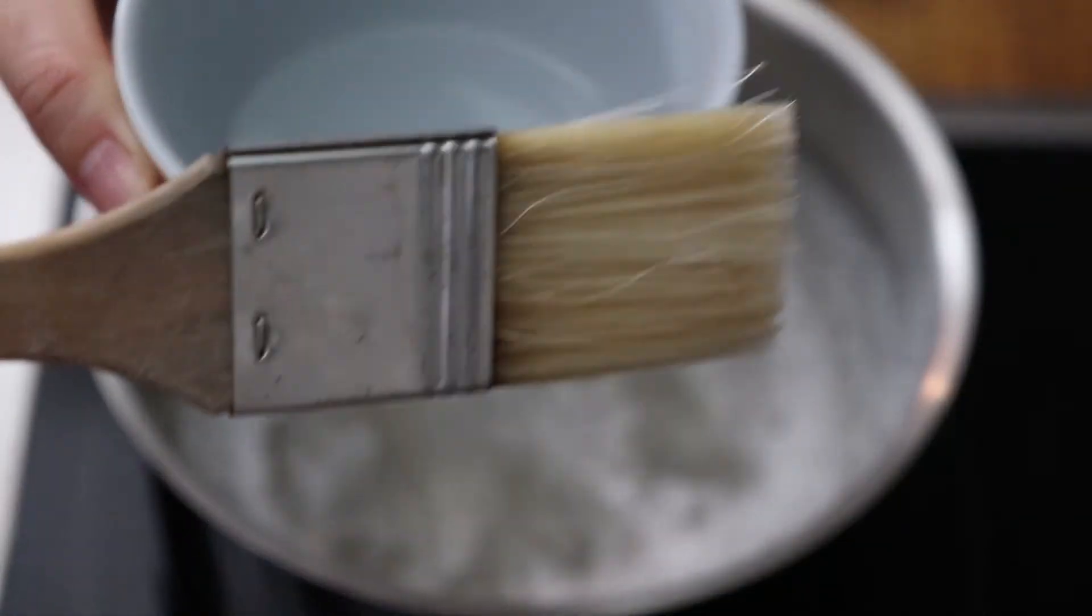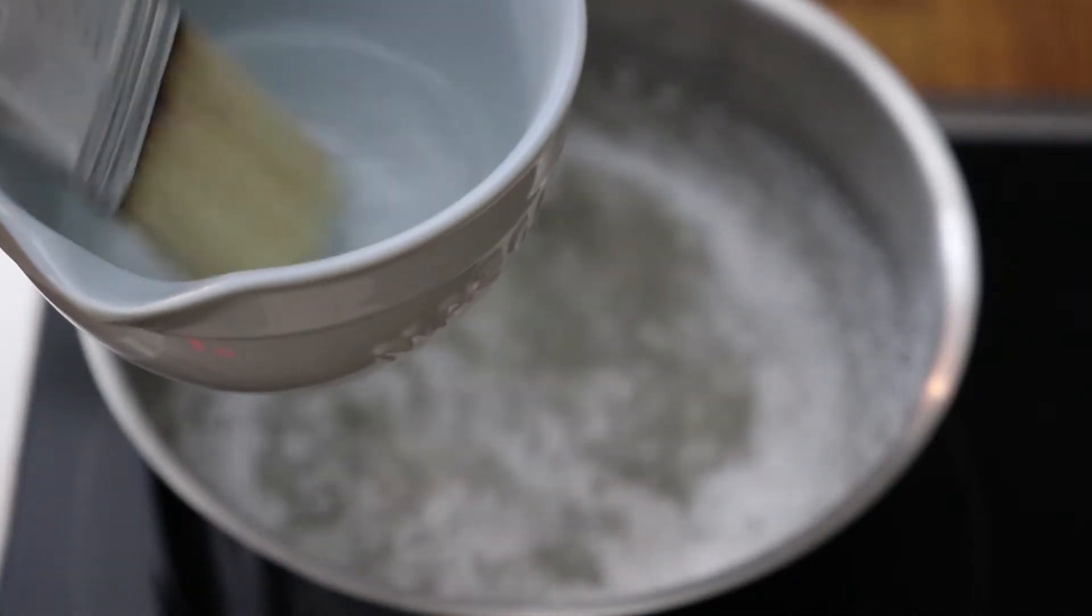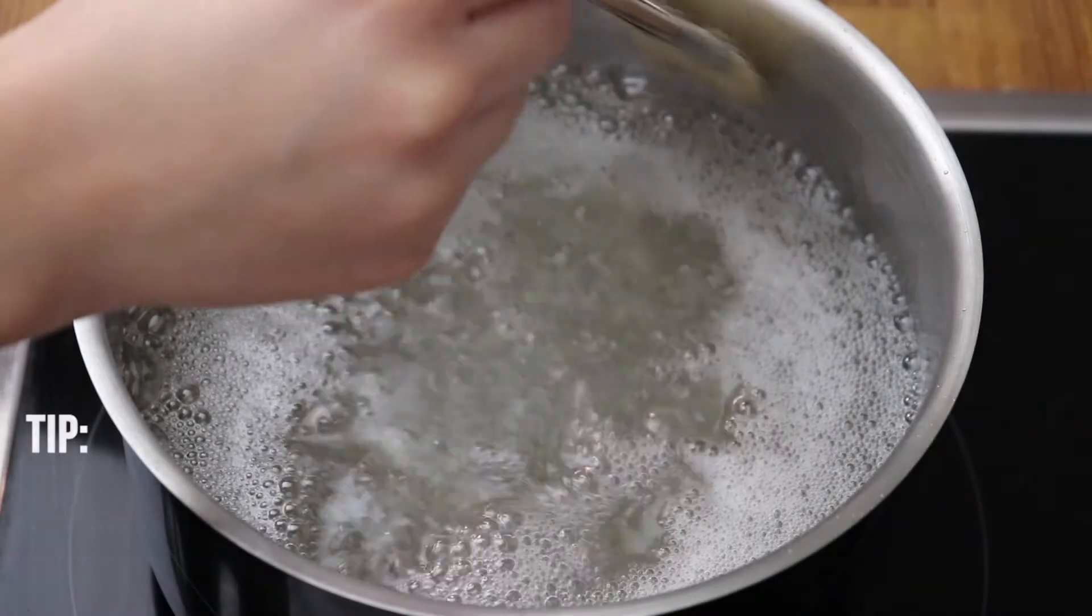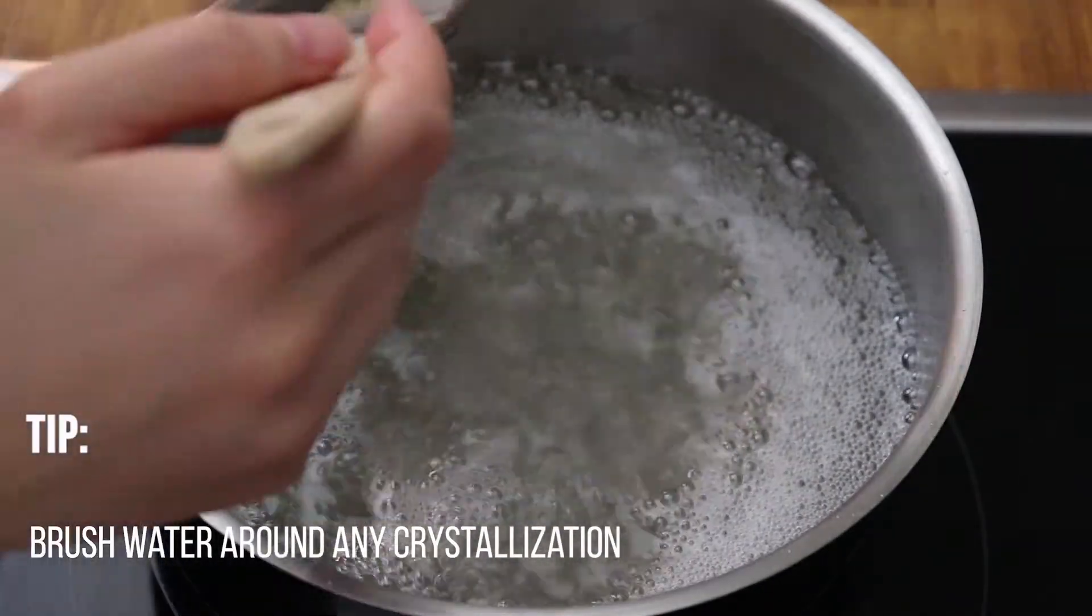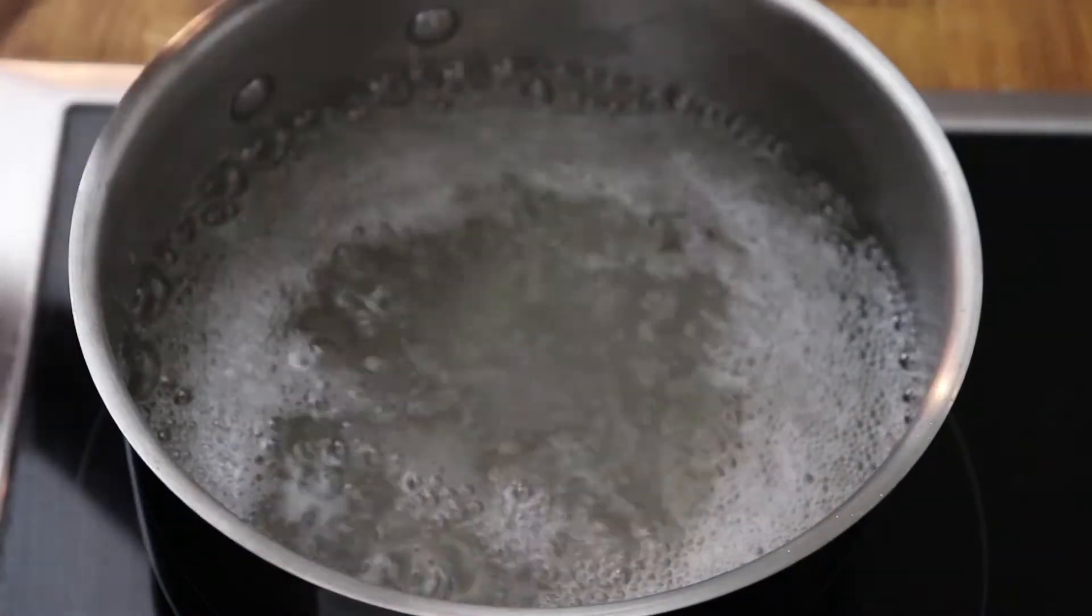Now since there's quite a bit of sugar in the syrup, we might get some crystals forming around the edge of the pot. So I do like to go with a brush and just brush some water on top of those bits.